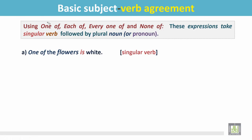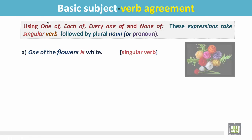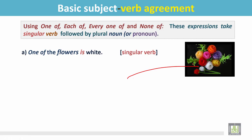One of the flowers is white. In the picture we see there are many flowers, but one of the flowers is white. The sentence begins with one. There is a plural noun here, flowers, but this plural noun is followed by a singular verb, is.